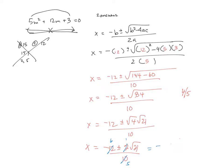So my final answer will be minus 6 plus or minus square root of 21, all over 5. That would be my answer.